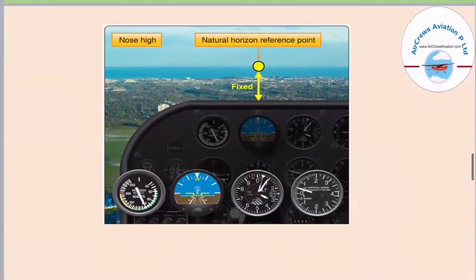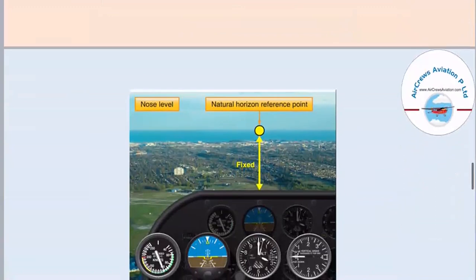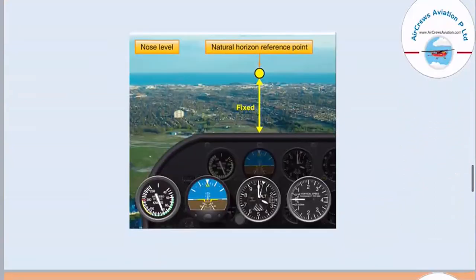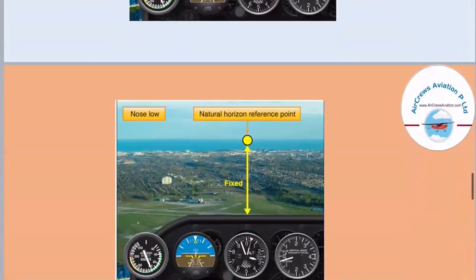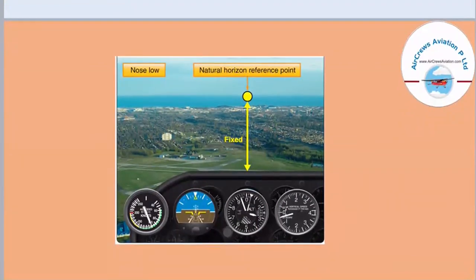Here are photos showing straight and level flight. If the aircraft has a nose-high attitude, the head-up display shows the position of the aircraft relative to the neutral horizontal reference point. The nose-level position shows the aircraft in a steady level position with respect to the natural horizontal reference point. When the nose is low, the distance from the natural horizontal reference point is maximized, showing the nose-down attitude clearly.